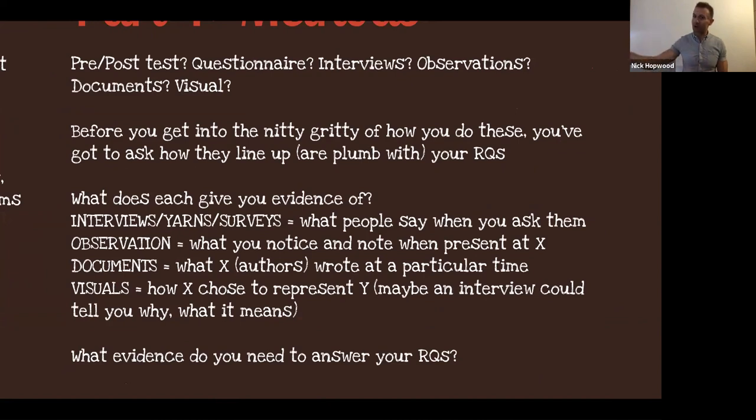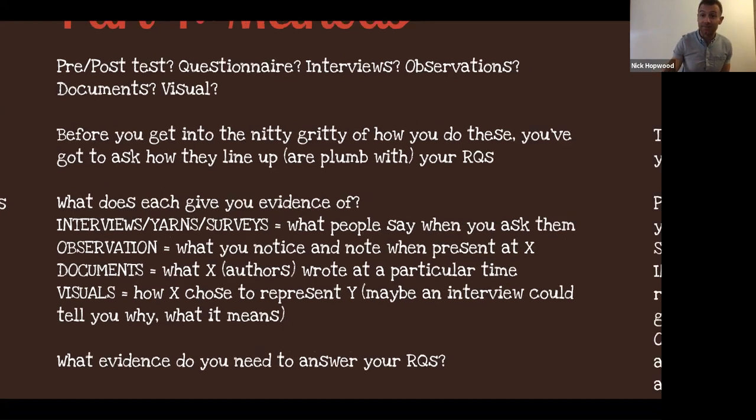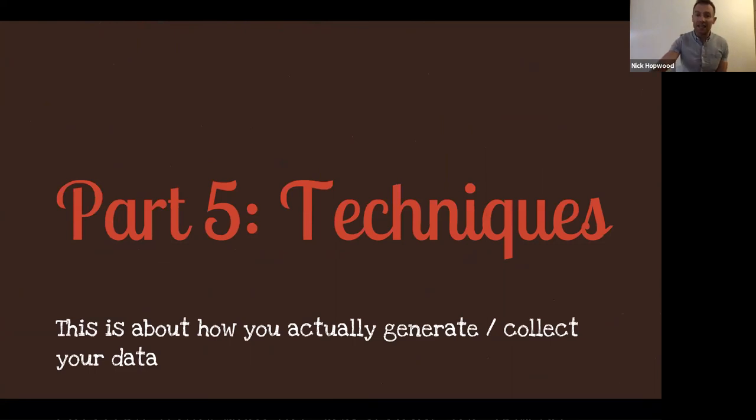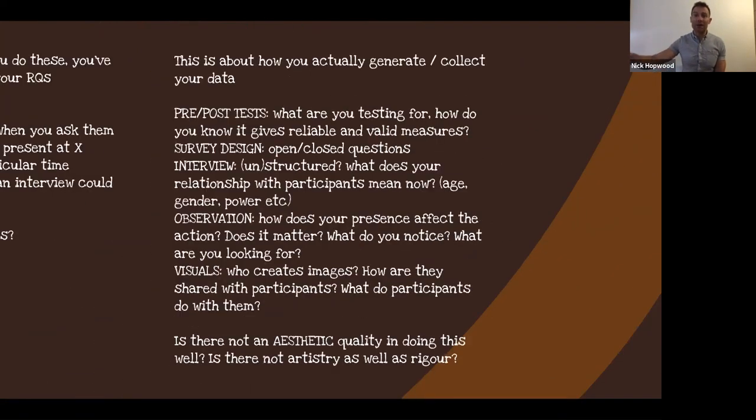You've got to think what does each of these things give you evidence of. An interview or a yarn, which is an indigenous way of talking with people, are very common here in Australia, or more common at least. Or surveys give you example of what people say when you ask them something. It doesn't give you exact evidence of what's in their heads. Observation gives you evidence of what you notice and note when you're present in a certain place. Documents give you evidence of what people wrote at a particular time with a particular purpose. Visuals, photographs tell you how somebody else chose to represent something, and maybe the interview might tell you more about that. The question you've got to ask is what evidence do I need to answer the questions I've got that I want to answer.